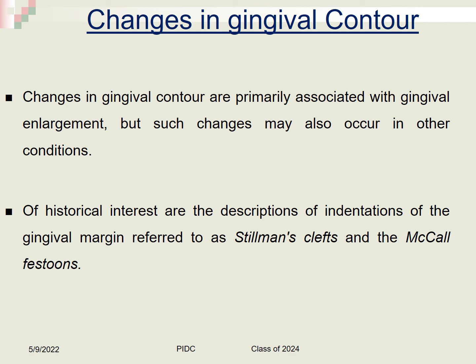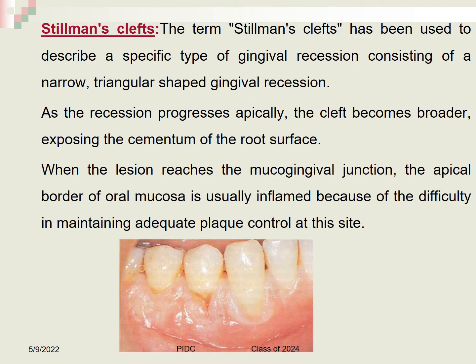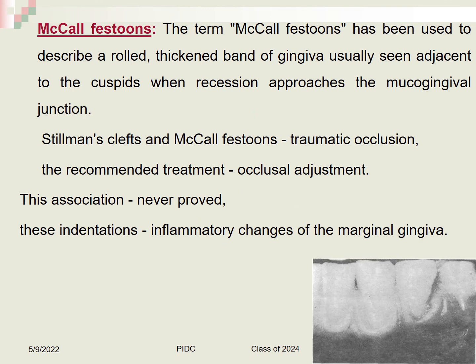Of historical interest, Stillman's cleft describes a narrow triangular-shaped gingival recession that becomes broader as it progresses apically, exposing cementum. When it reaches the mucogingival junction, the apical border is usually inflamed. McCall's festoons describe a rolled, thickened band of gingiva usually seen adjacent to the cuspids. Both Stillman's clefts and McCall's festoons have been associated with traumatic occlusion, though this association is not confirmed, and the recommended treatment is occlusal adjustment.